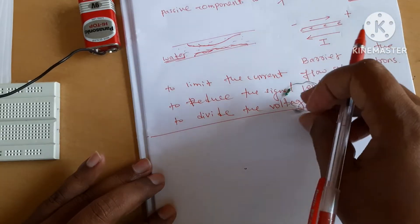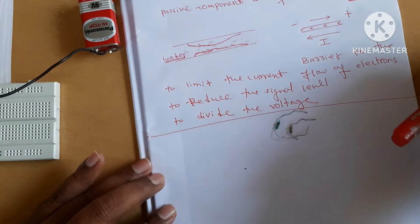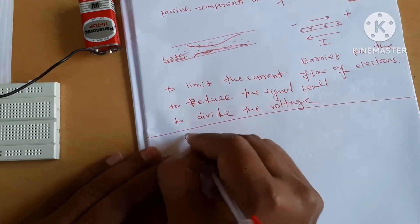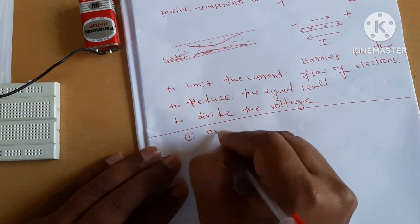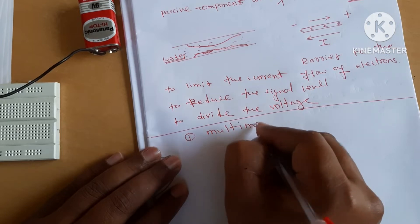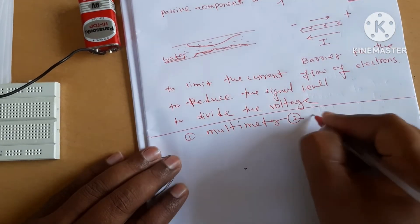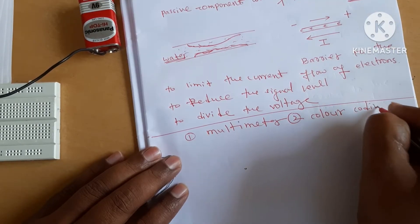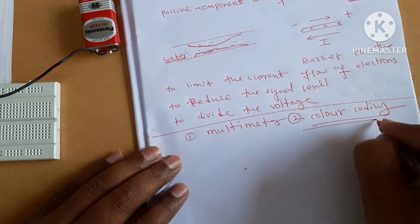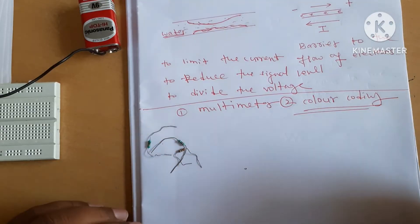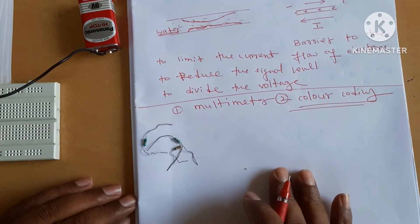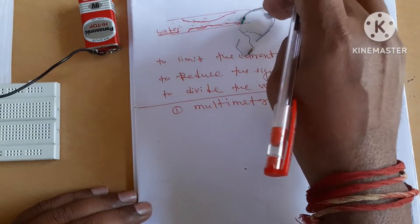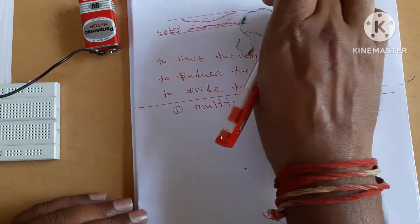When someone gives you a resistor, you have to find out the value of its resistance. You can either check it directly with a multimeter, or use the color coding method to find out the resistance value.